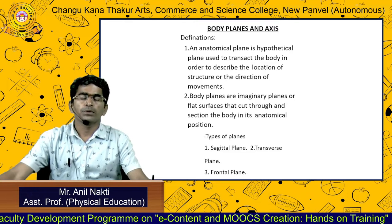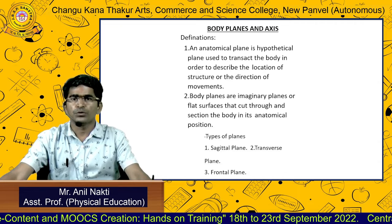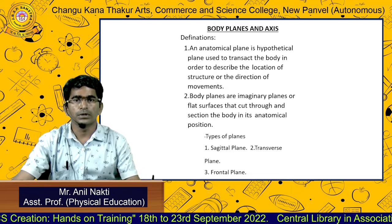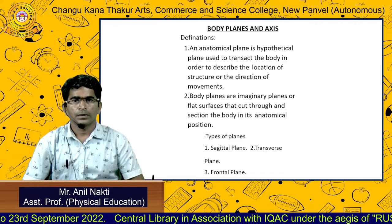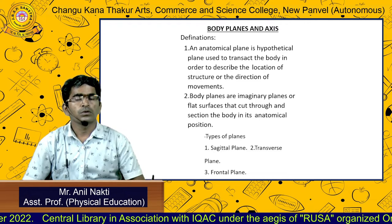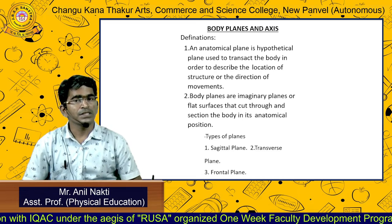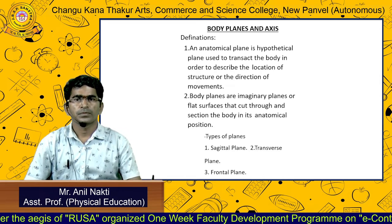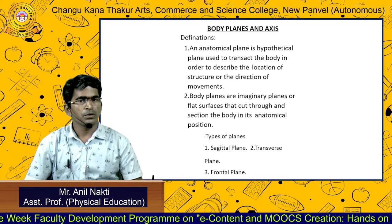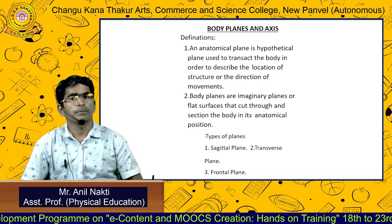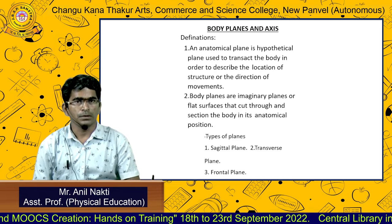Friends, today we are going to discuss physical education and physical activity. We are going to do so many activities from our birth. At birth, there are little movements that take place from our body. Then, through our growth and development, those movements increase. Whatever movement occurs from our body takes place from a specific part and along a specific line. We call that specific part the planes, and the specific line the axis. So today we are going to see body planes and axis.